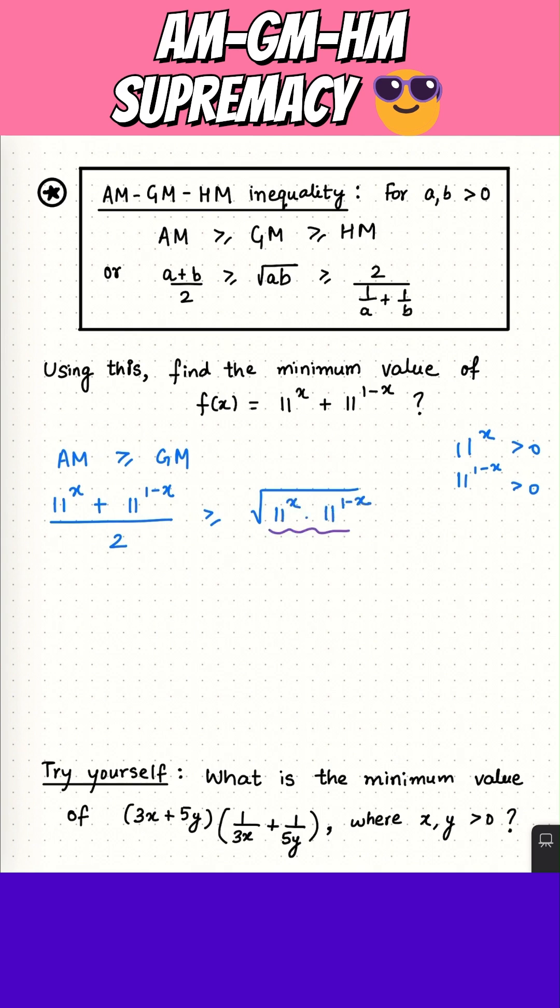If we simplify the right side, we are left with 11 to the power X plus 11 to the power minus X divided by 2 is greater than or equal to square root of 11, which means 11 to the power X plus 11 to the power 1 minus X is always greater than or equal to square root of 2 into 11.